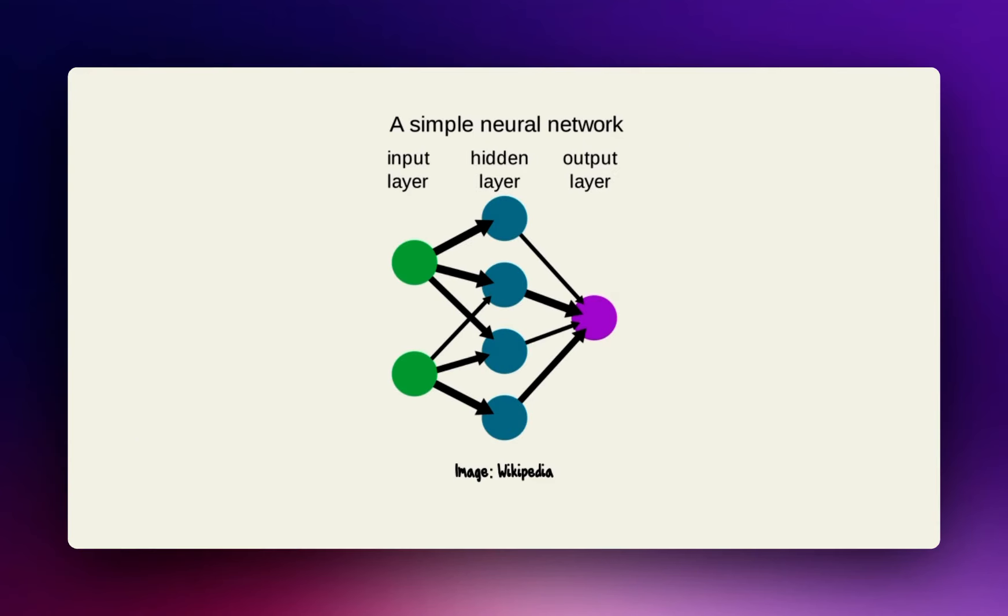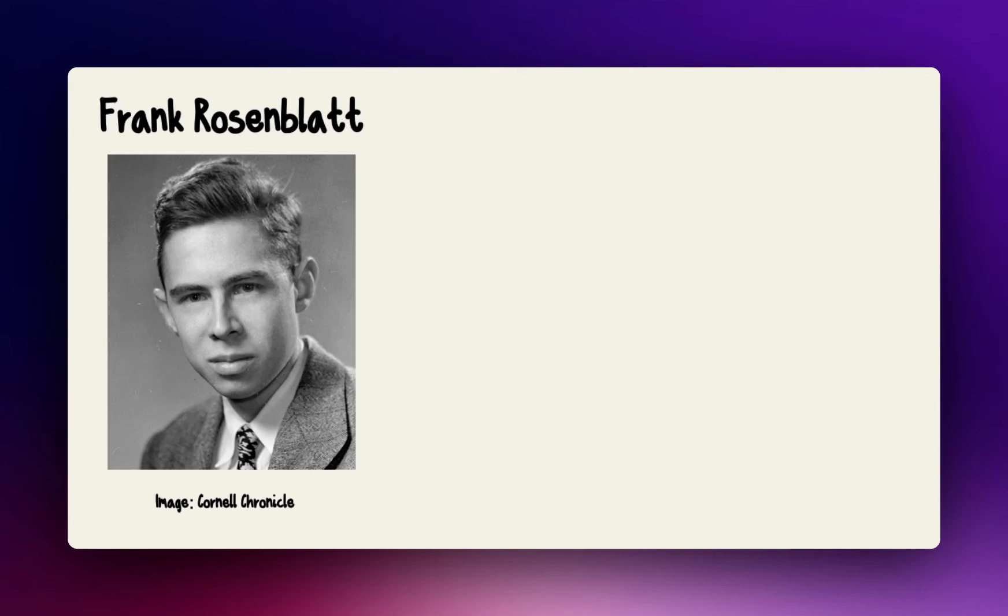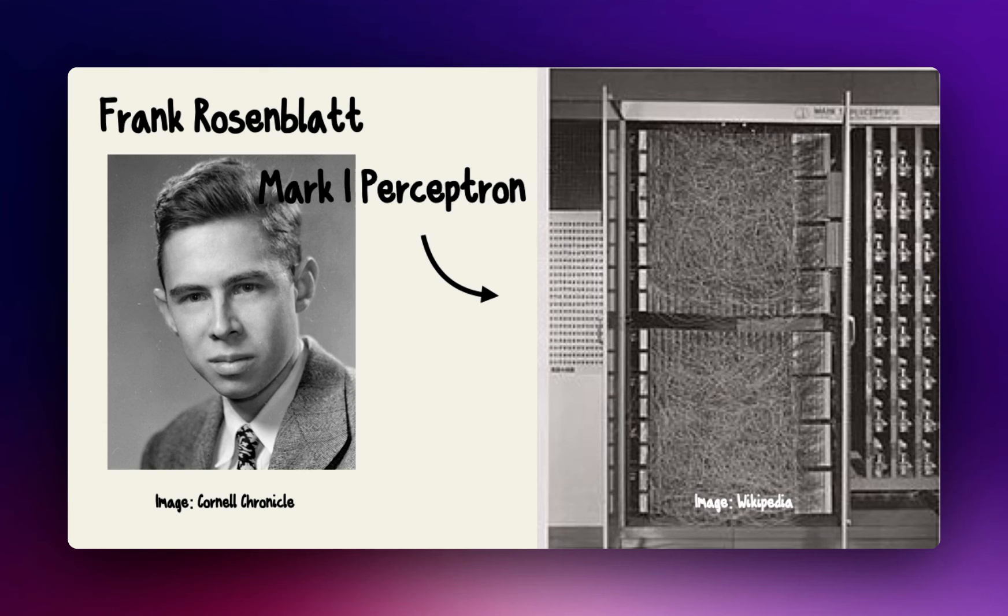To understand neural networks, you must first understand their building block, the perceptron. Beginning in 1957 at the Cornell Aeronautical Laboratory, psychology researcher Frank Rosenblatt built the first real-world implementation of the perceptron. The Mark I perceptron was a machine consisting of 400 photocells that could classify images.